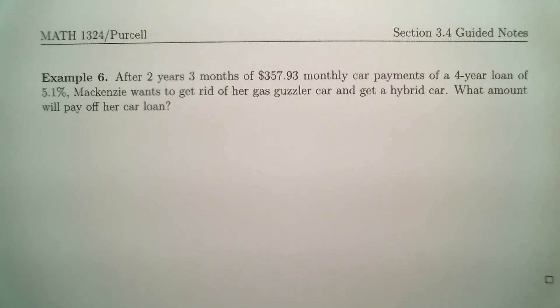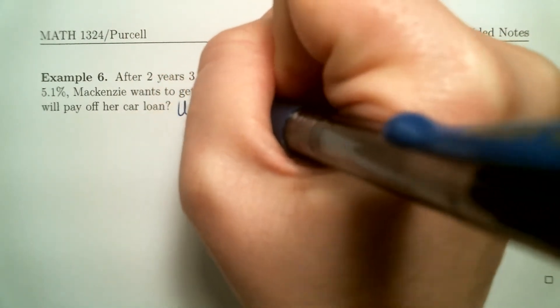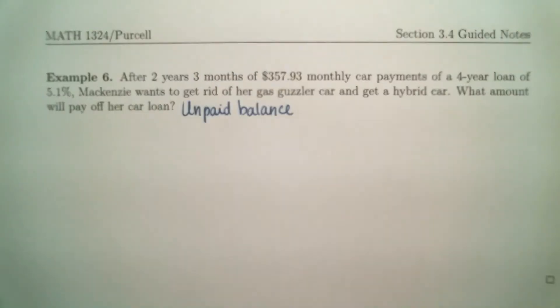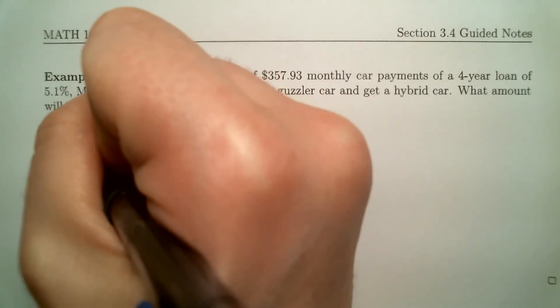Notice you are not told how much the car or how much she purchased the car for. You do not need to know that. The monthly payment has already been given to you. If it hadn't been, you would have to calculate it. So this is an unpaid balance problem. For unpaid balance problems, we have to use the present value of an annuity formula. So let's go ahead and write that down.